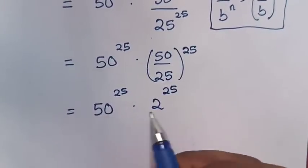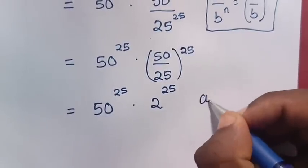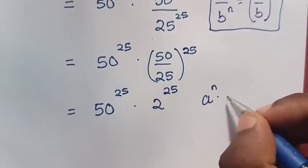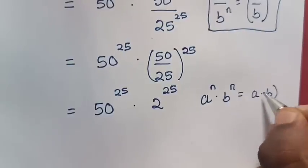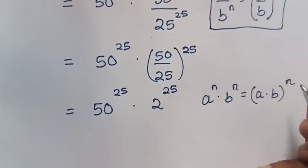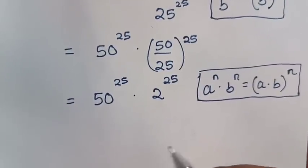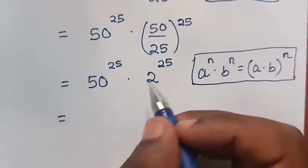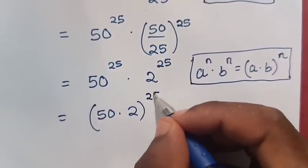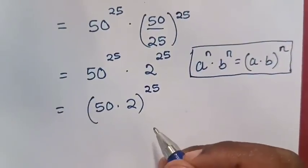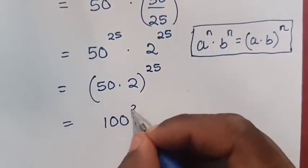Now we'll apply the exponential rule that a power of n times b power of n is equal to a times b, bracket power of n. So here in our expression, it will be equal to 50 times 2, bracket power of 25. So this will be equal to 100 power of 25.